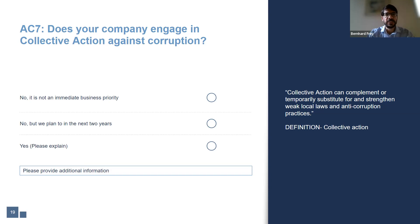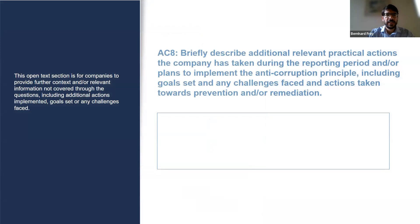If your organization does not currently engage in collective action against corruption, please feel free to utilize the B20 Collective Action Hub, maintained by the Basel Institute on Governance, which offers an open database of existing initiatives around the world. As in the sections on human rights, labour, and environment, the last question of the anti-corruption section is open narrative format, where companies can provide further context and additional relevant information not covered in previous questions, such as additional activities implemented or goals set.